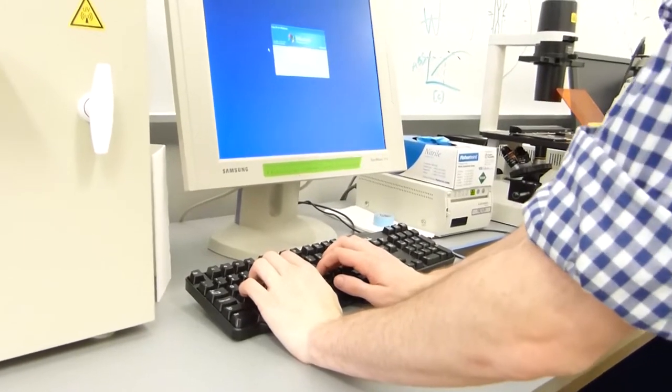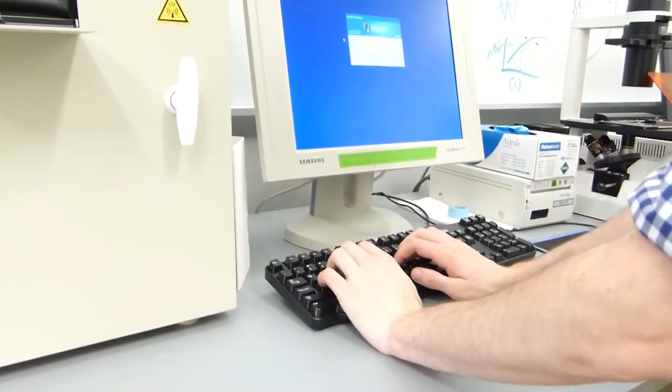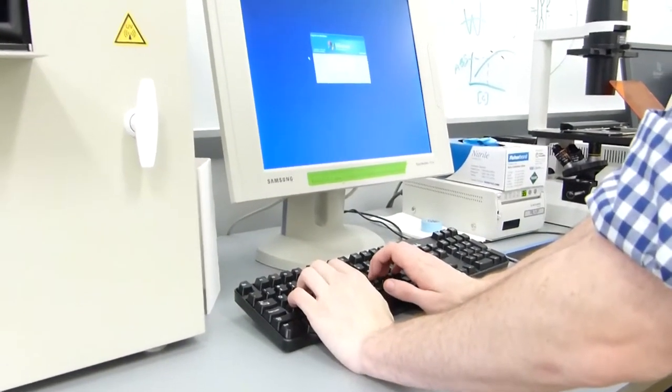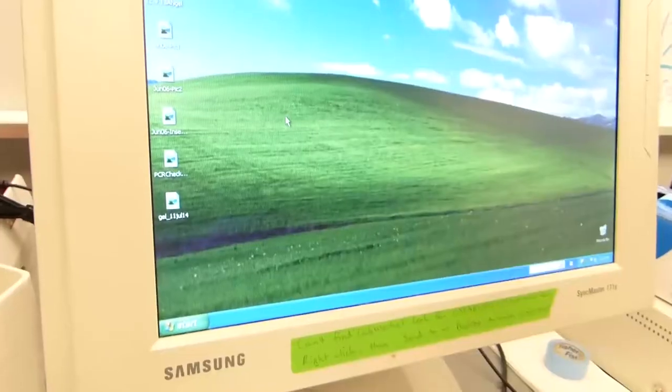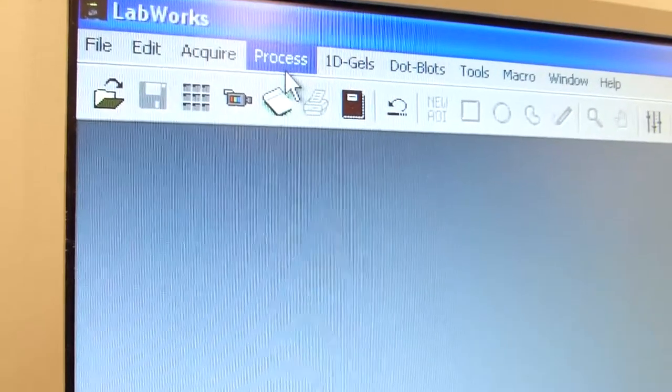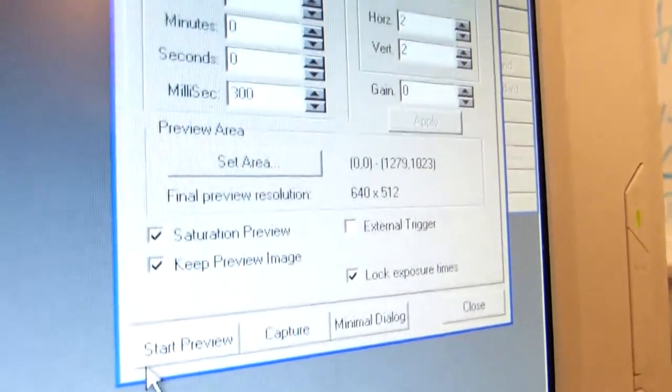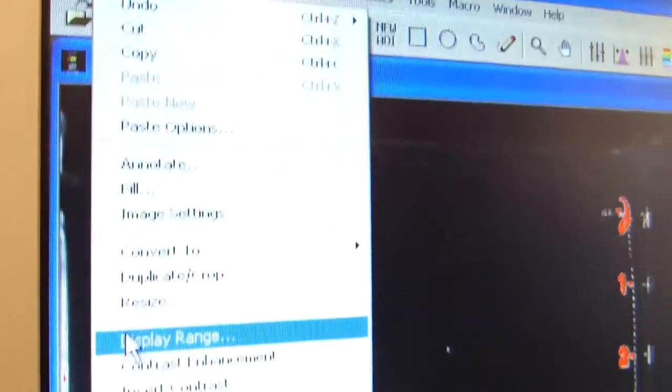You can then check your gel by looking inside the viewing frame here. Use the computer next to the imaging box to sign in. It may already be logged on for the class or you can use your own user name and login. Once you are logged in, go to the start menu and open LabWorks. You can close out this first window and then go to acquire video digital.